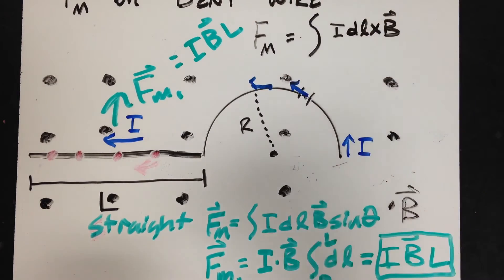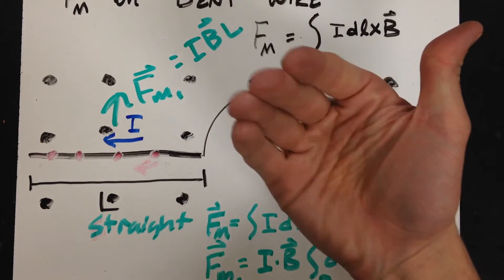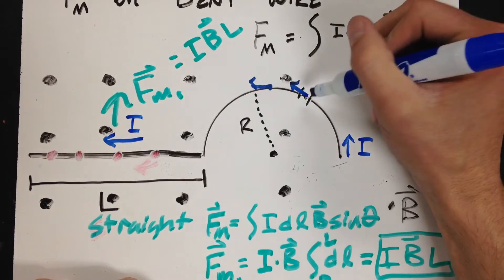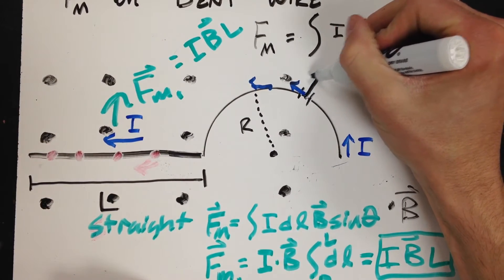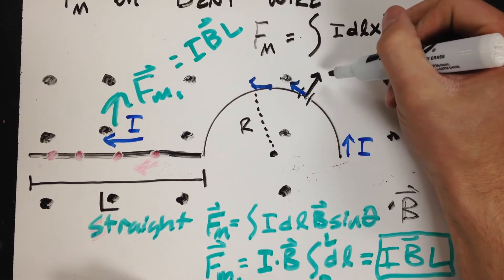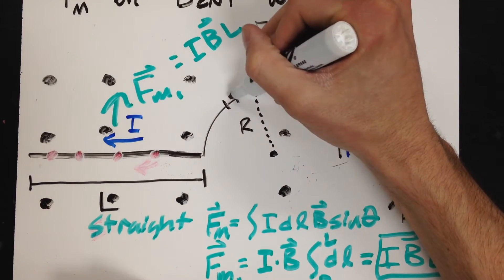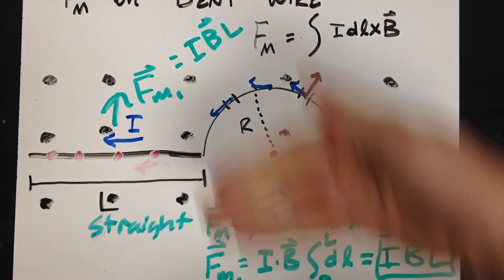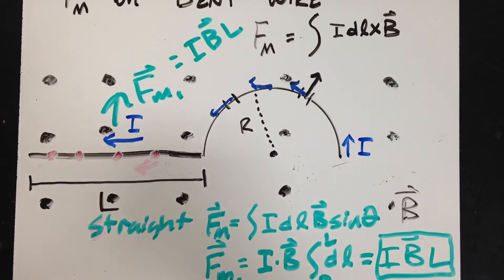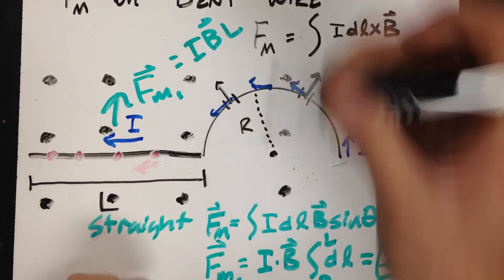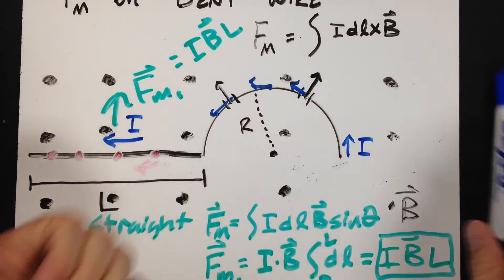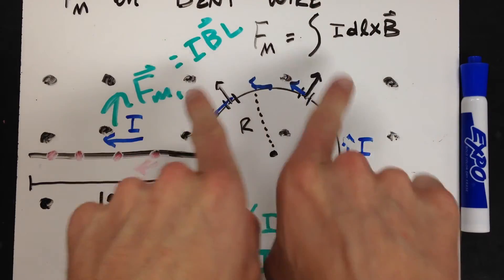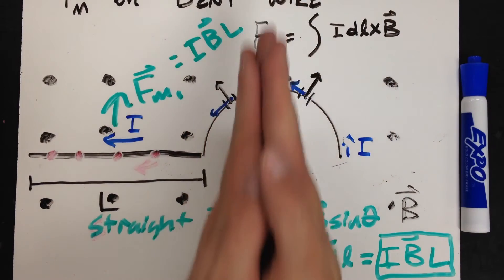Running my fingers in the direction of the current — tangent to the path — and curling them in the direction of the field, I get a force directed radially outward. Since the force must be perpendicular to both current and field, each small section's force points directly along the radius. If I do this for every corresponding section around the semicircle, I get a bunch of force vectors that fan outward — meaning all their x-components cancel out, leaving only an overall upward net force.